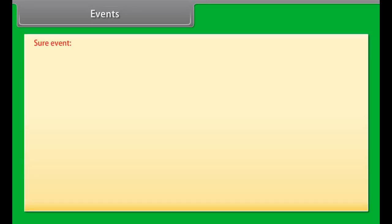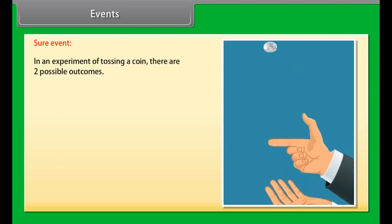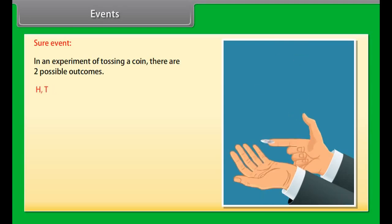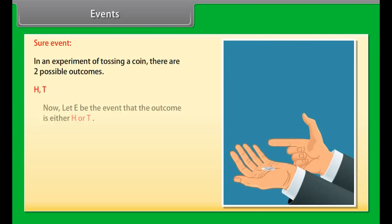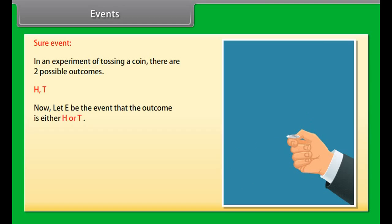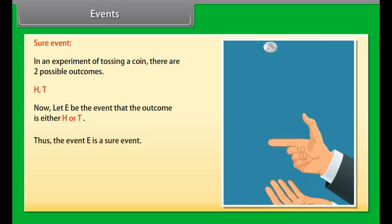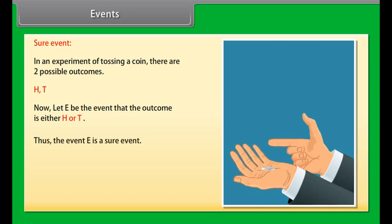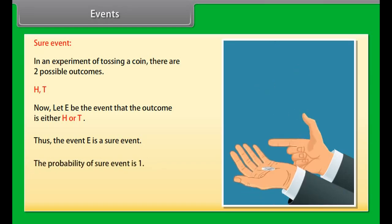Sure event: in an experiment of tossing a coin, there are 2 possible outcomes: H and T. Let E be the event that the outcome is either H or T. Thus, the event E is a sure event. The probability of a sure event is 1.